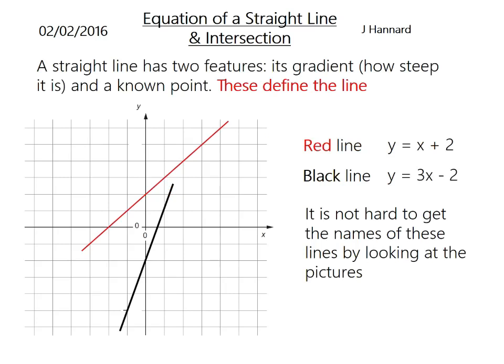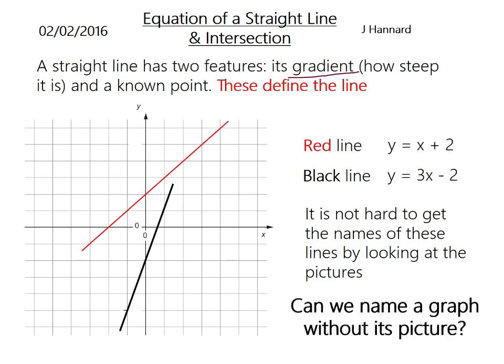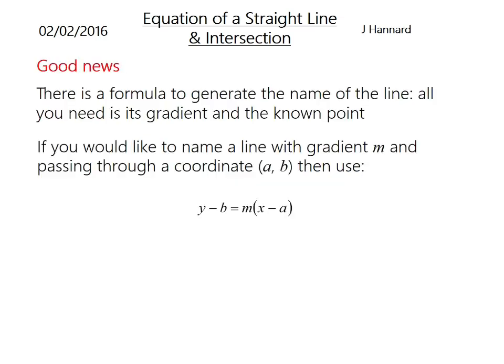So a straight line has two features: its gradient, i.e. how steep it is, and a known point, and these define the line really. The red line is y equals x plus 2 and the black line is y equals 3x minus 2. It's not hard to get the names of the lines by looking at the pictures. But can we name a graph without its picture? Yes, we can. There's a formula to generate the name of a line. All you need is its gradient and a known point.